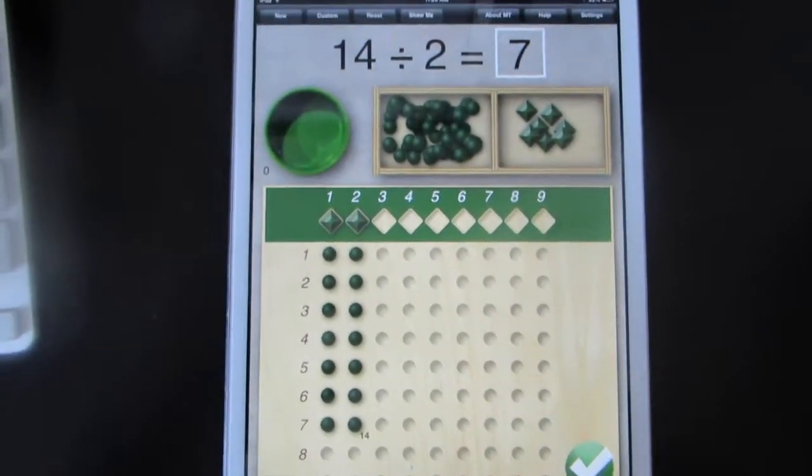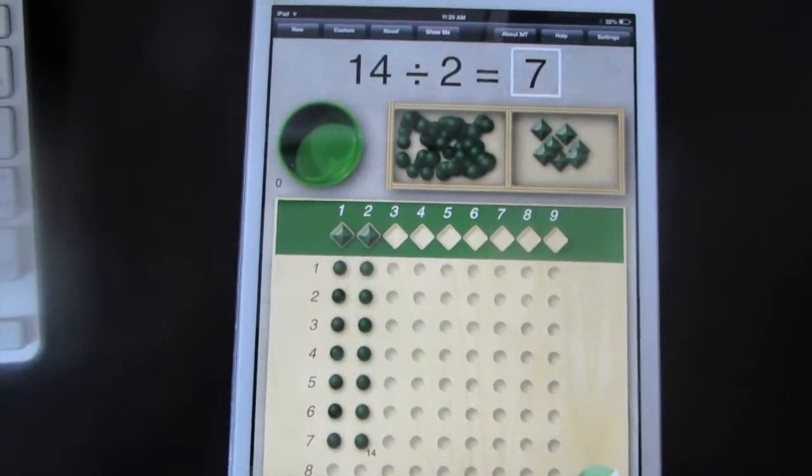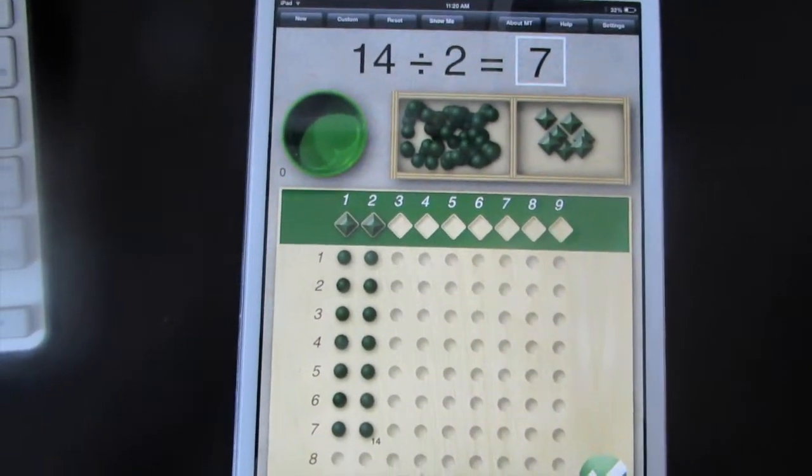Tap the green check mark if you're ready to try one on your own. For each problem, you can solve it on your own and then check your work by pressing show me.